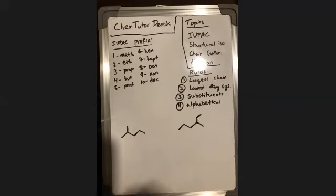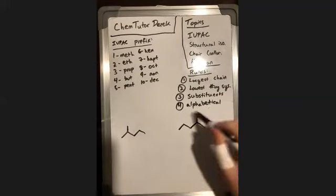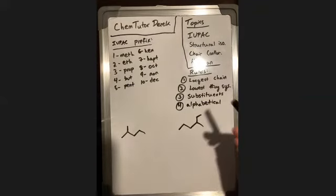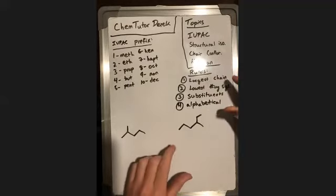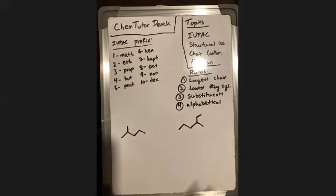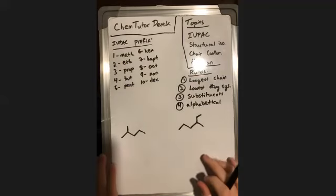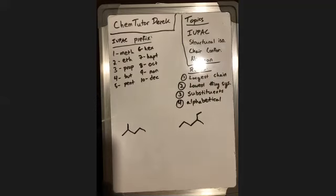The rules for naming in abbreviated form: first identify the longest chain, then determine the lowest numbering system, then name your substituents, and finally record everything in alphabetical order. I'll go through this — it's a very abbreviated set, but once you understand each rule it's quite easy to apply. I'll jump right into examples to explain what these prefixes and rules mean.